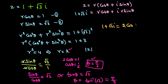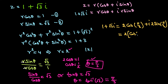So 1 plus square root of 3 times iota equals 2 cosine(pi over 3) plus iota times 2 sine(pi over 3), which we can write as 2 times (cosine(pi over 3) plus iota sin(pi over 3)). This is the polar form of the complex number 1 plus square root of 3 iota.